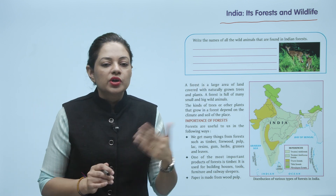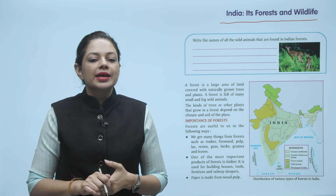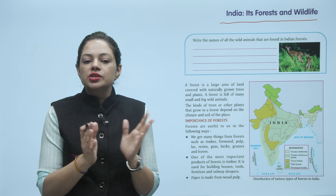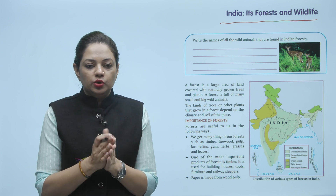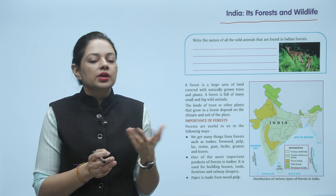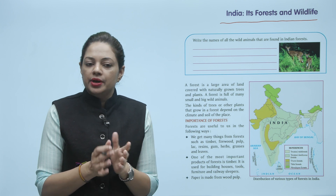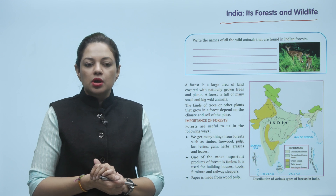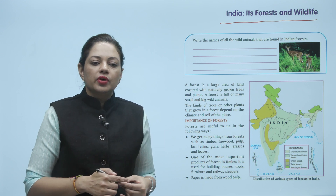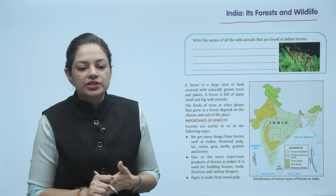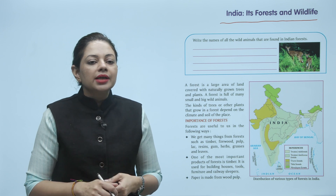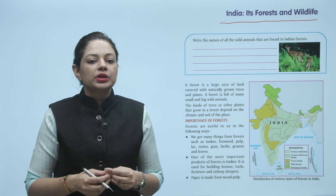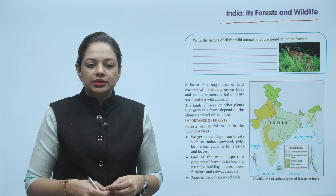A forest is a large area of land covered with naturally grown trees and plants. A forest is full of many small and big wild animals. The kinds of trees or other plants that grow in a forest depend on the climate and soil of the place.